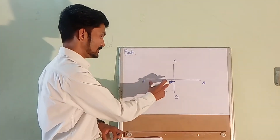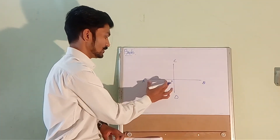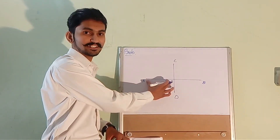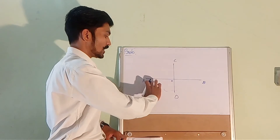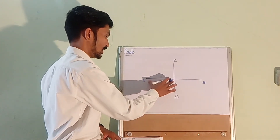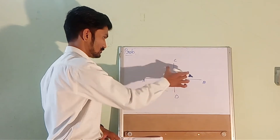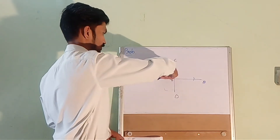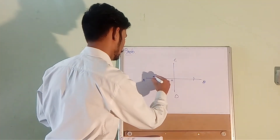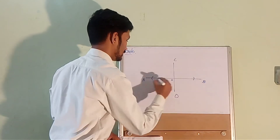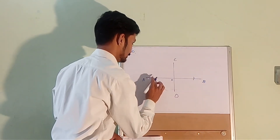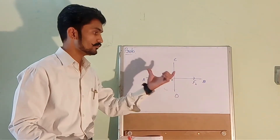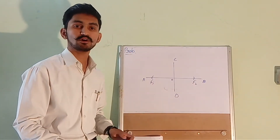Now take C as center and half of AB, which is AO, as radius and cut arcs on AB. This gives us two points F1 and F2, which are the foci of our ellipse.